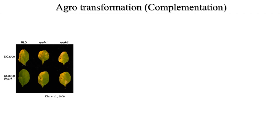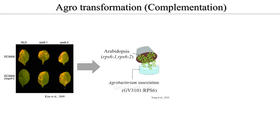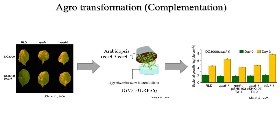Also, now I am learning the agrotransformation method. Usually, for checking the function of a gene, we should use knockout plants. And by performing complementation, we should check what result will occur when they are restored. The first figure explains that when RPS6 is mutated in the plant, the plant cannot resist HopA1. So after performing the agrotransformation, they can check that RPS6 is related to the pathway of HopA1-triggered immunity. So if I find the HopA1 target protein, I can use this method for testing the function of that gene.